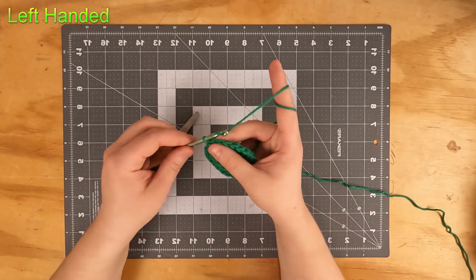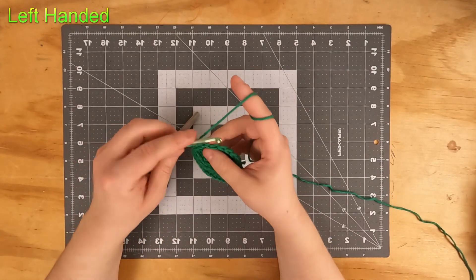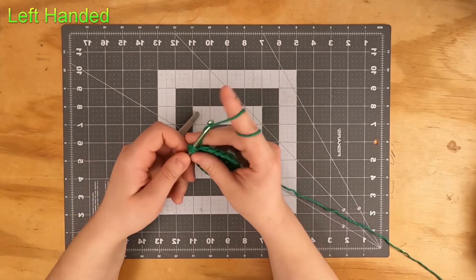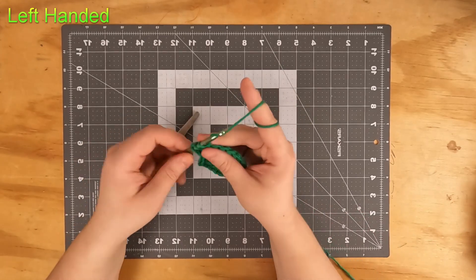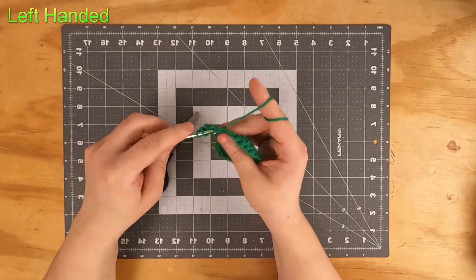For round three, chain up two and then we're going to do one double crochet by itself and then a double crochet increase in the next stitch. We're going to do that all the way around.